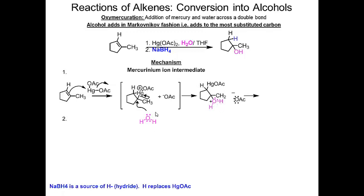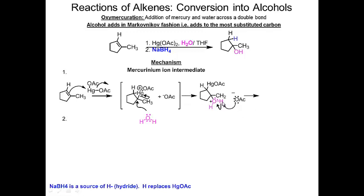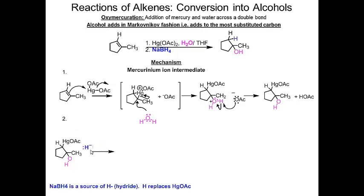Water comes in and attacks the mercurinium ion. The acetate lost in the first step then deprotonates water, giving an alcohol with OH on the more substituted carbon and mercury still attached — this is not the final product. In the second step, the mercury intermediate reacts with sodium borohydride, which provides H minus. H minus attacks, mercury leaves in a substitution reaction, and the product has H on the least substituted carbon and OH on the most substituted carbon.